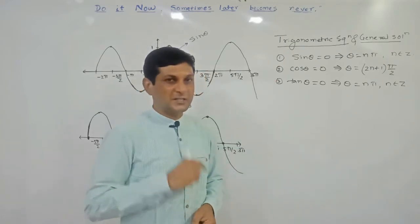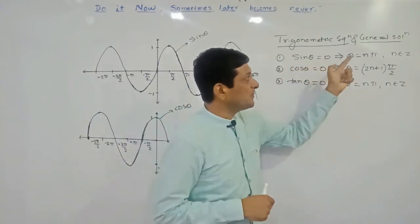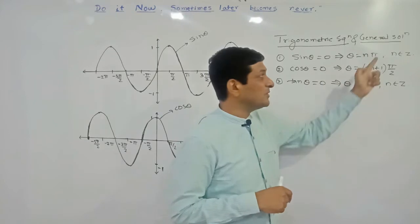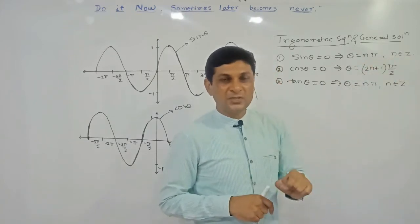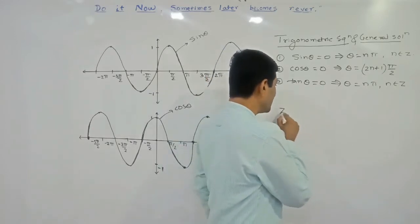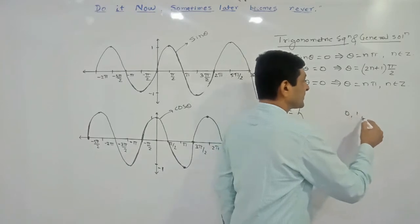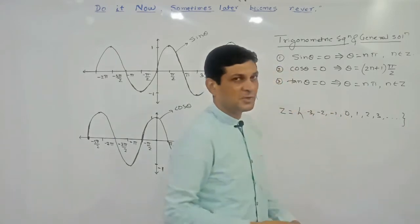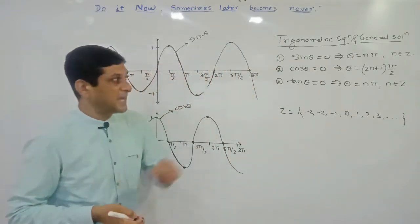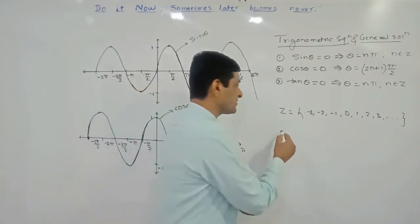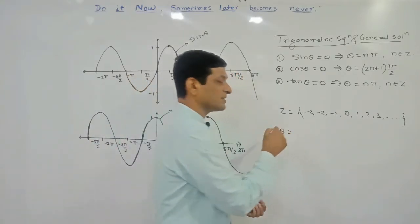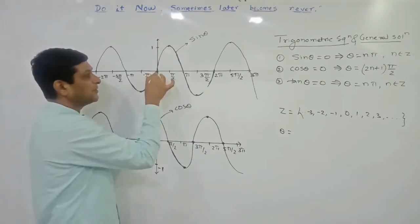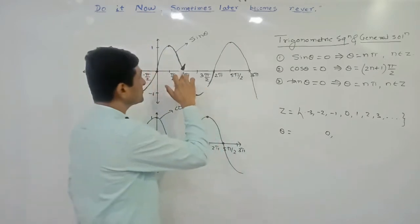We will try to understand how we got these results. sin θ = 0 implies that θ = nπ. The set of integers Z contains: 0, 1, 2, 3, ... and on the negative side: −1, −2, −3, and so on. From the graph we can observe that sin θ = 0 at θ = 0. We are trying to find all angles θ where sin θ equals zero.